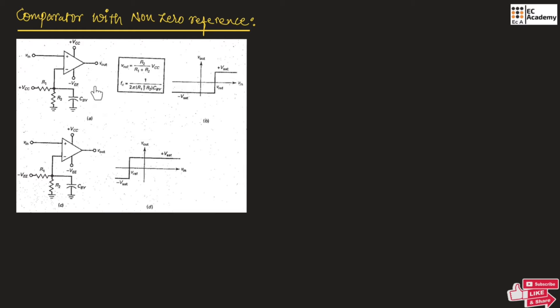Here in the circuit, we are using a bypass capacitor that is used to reduce the ripple and noise at the inverting input. This operation is for positive reference voltage.